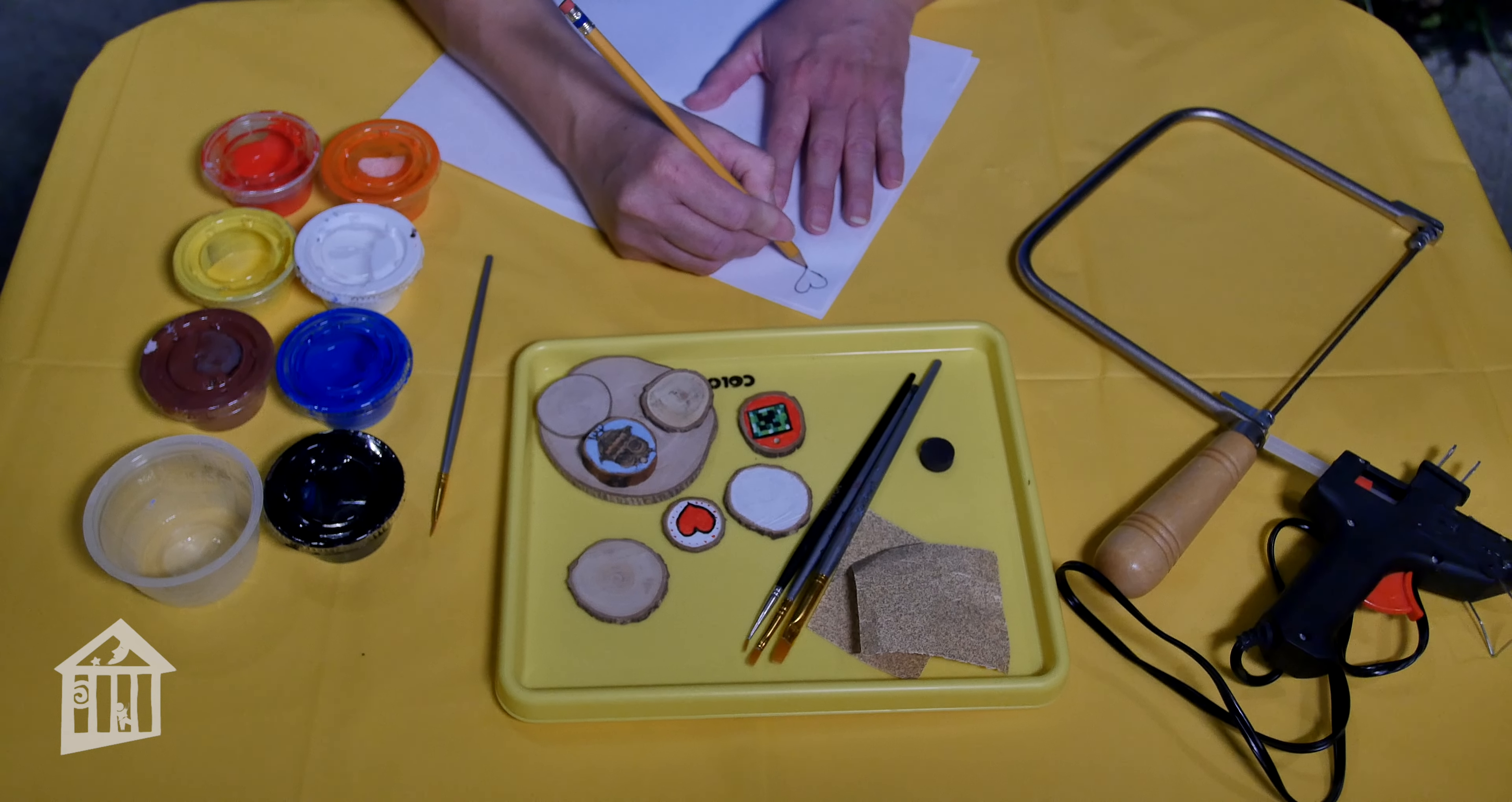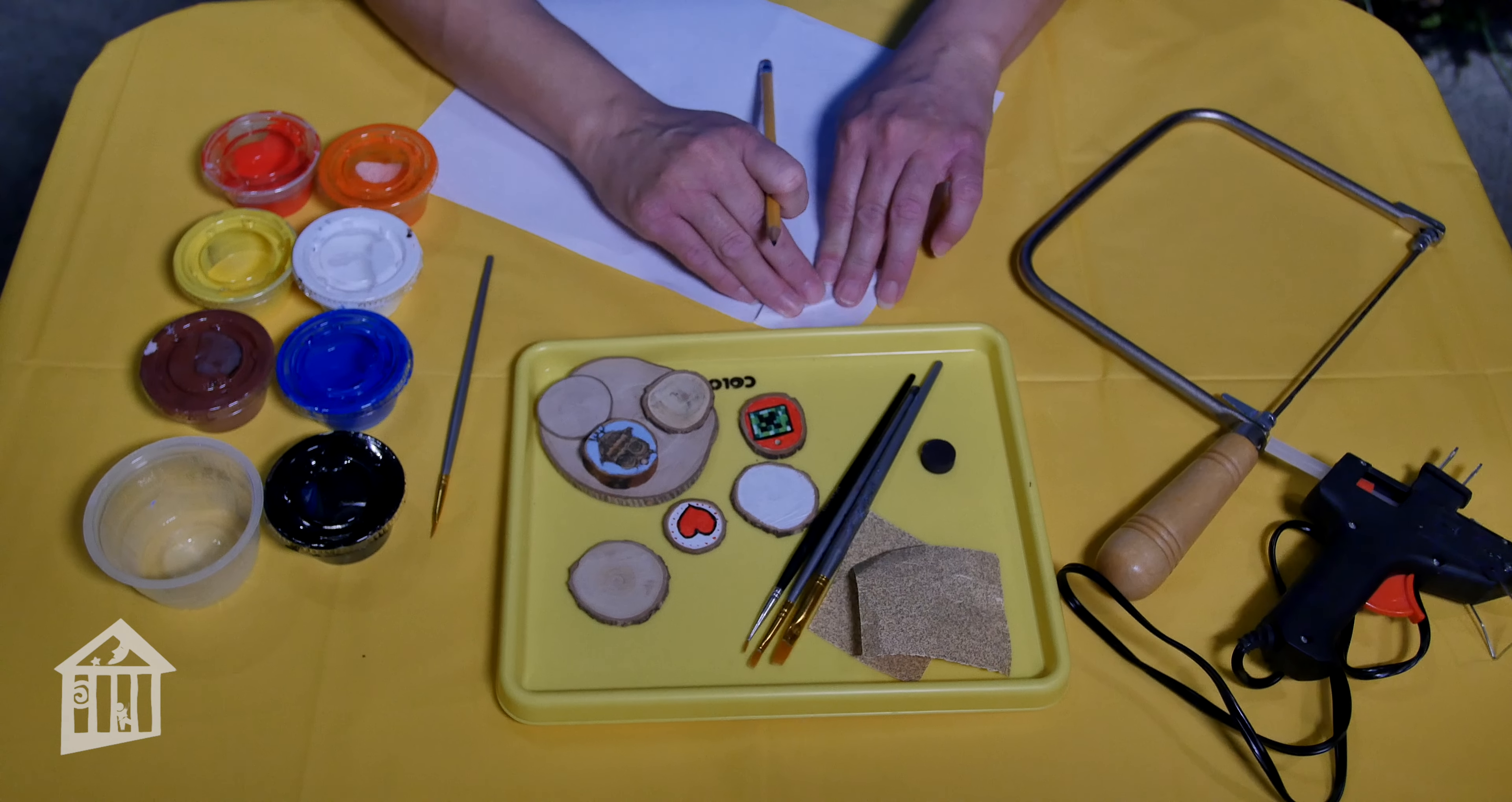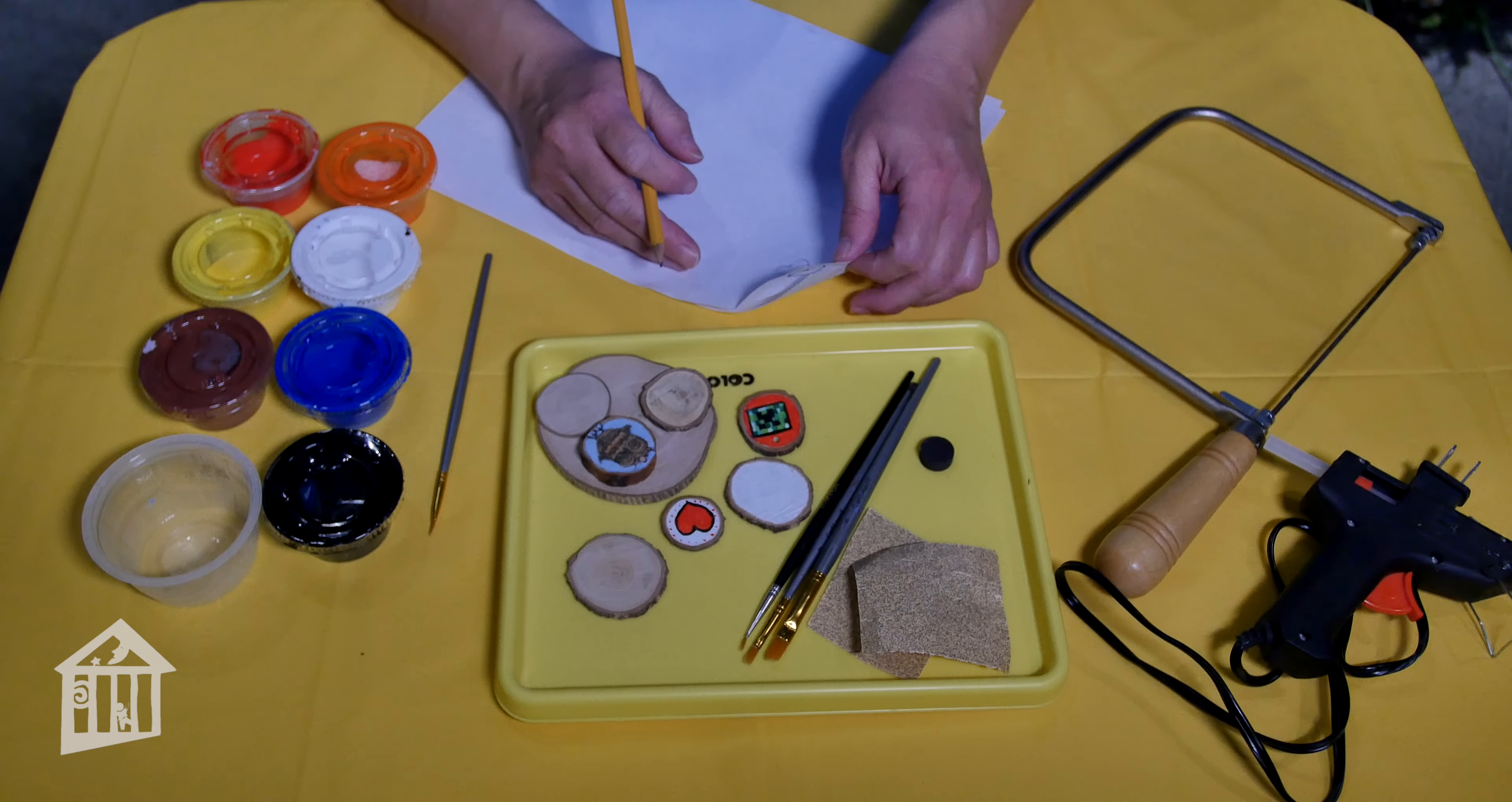What you want to do is keep going over that heart with the pencil over and over so you have a really dark line. And then what you're going to do is you'll put that upside down on your wood slice and you'll come to the other side and you'll trace over it. And as you trace over it, it transfers it. So it's kind of like a low-tech way to transfer a drawing. So you can do that on your wood slices.